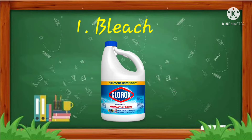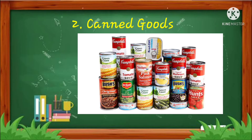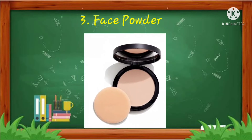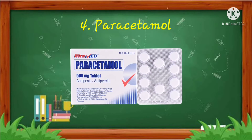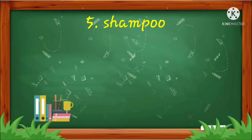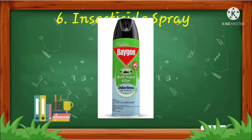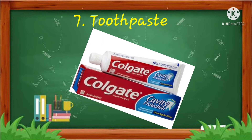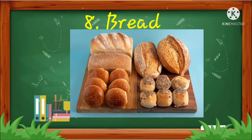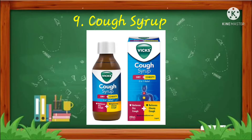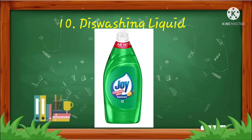Number 1: Bleach. Number 2: Canned goods. Number 3: Face powder. Number 4: Paracetamol. Number 5: Shampoo. Number 6: Insecticide spray. Number 7: Toothpaste. Number 8: Bread. Number 9: Cough syrup. Number 10: Dishwashing liquid.